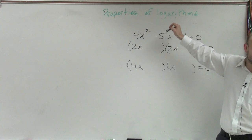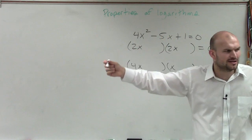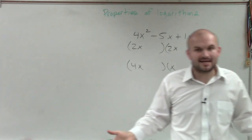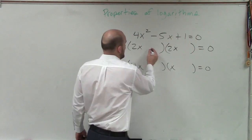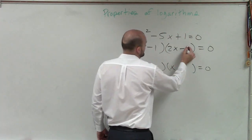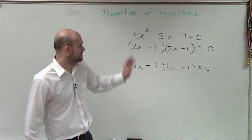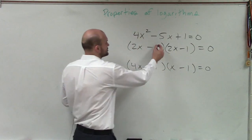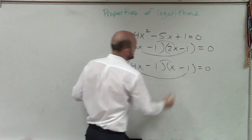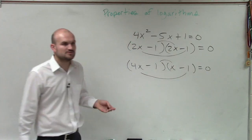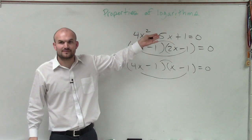But I look at my middle terms — they need to add to a negative number. So obviously I can't use positive 1 and positive 1. In reality, I only have one option: negative 1 and negative 1. So I need to determine, when I do my middle terms, out of those two problems, which is the only one that adds up to give me a negative 5.